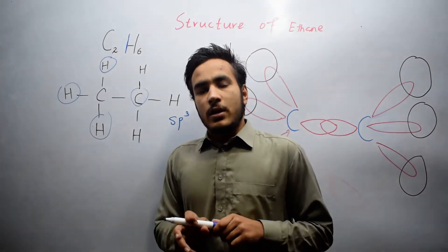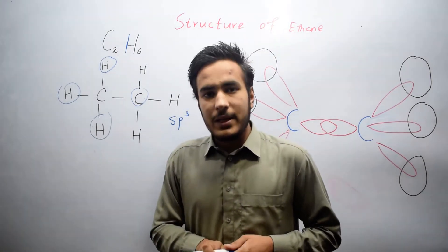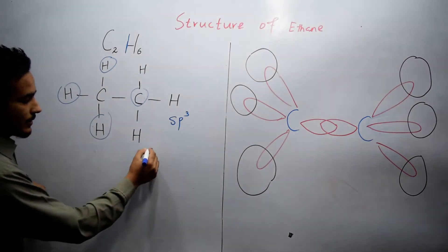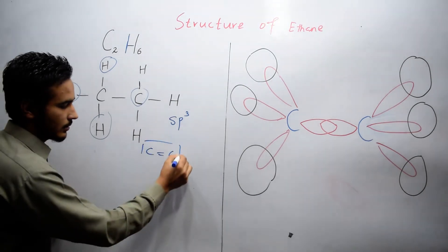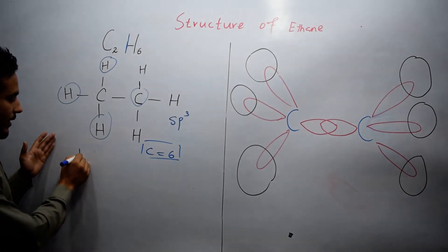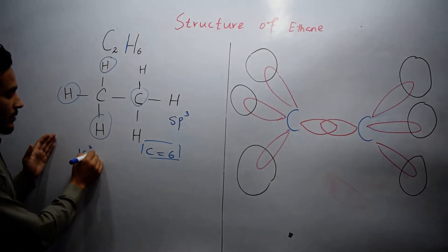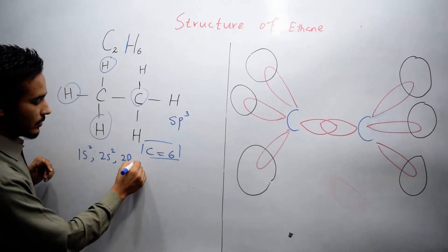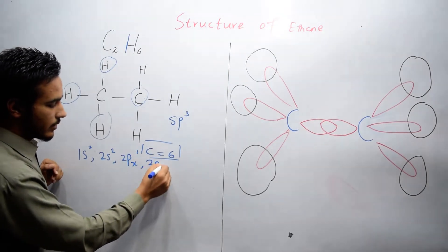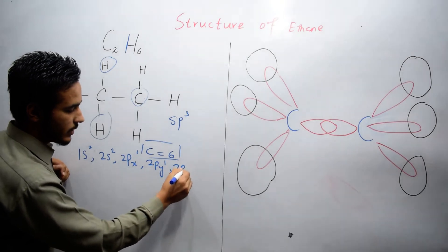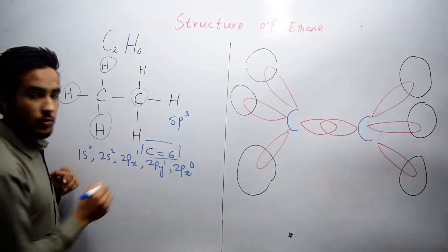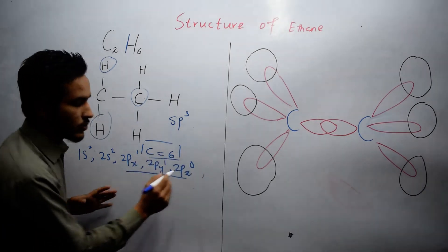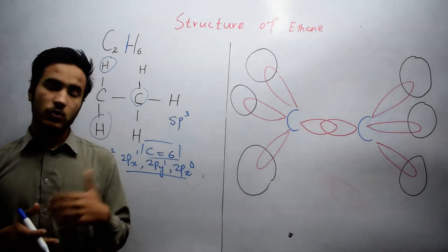If we look at the electronic configuration of carbon — carbon has six electrons, so its atomic number is six. Its electronic configuration is 1s2, 2s2, 2px1, 2py1, 2pz0. This means that in the p subshell it has only two electrons.